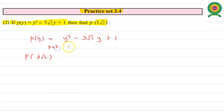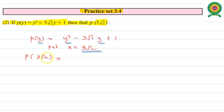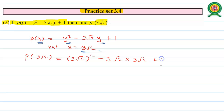We put y equals 3√2, meaning we replace all y in P(y) by 3√2. So P(3√2) equals (3√2)² minus 3·√2·(3√2) plus 1.